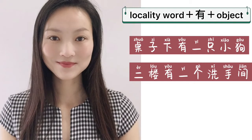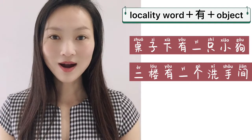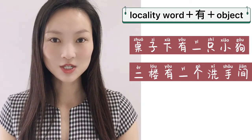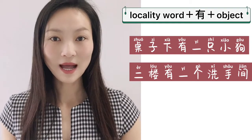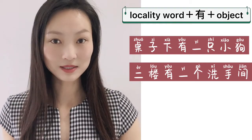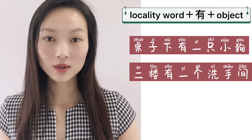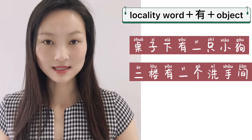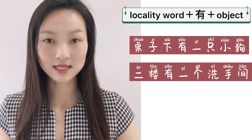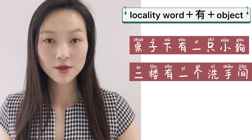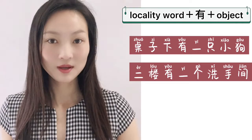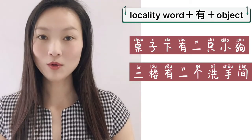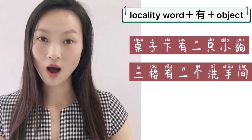二楼有一个洗手间。 二楼, at the second floor; 有, there is; 一个洗手间, a bathroom. So again: phrase of locality, plus 有, plus object.